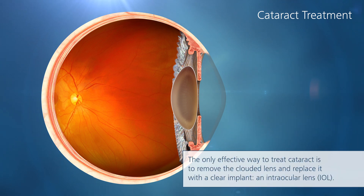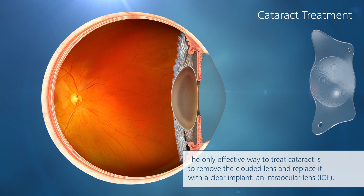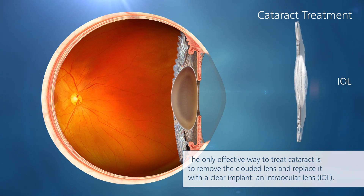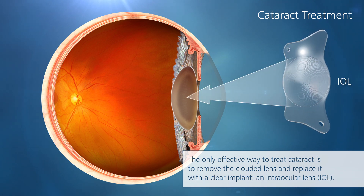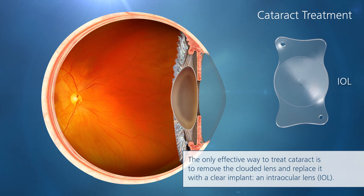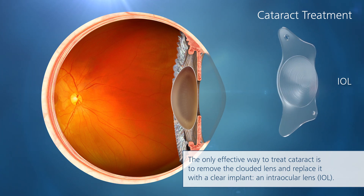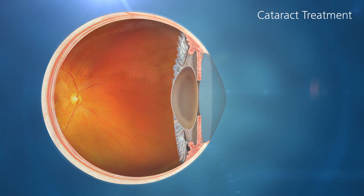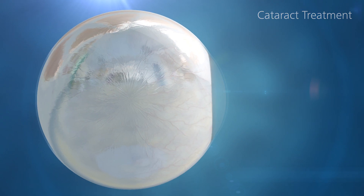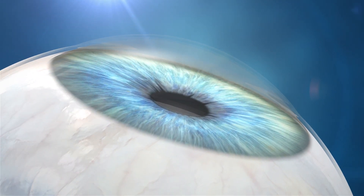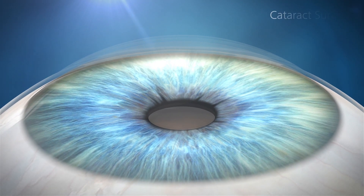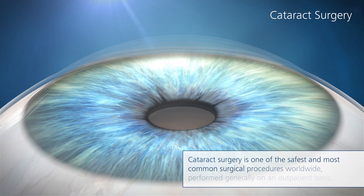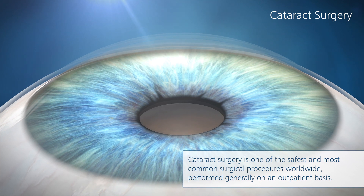The only effective way to treat cataract is to remove the clouded natural lens and replace it with a clear implant, a so-called intraocular lens, IOL. Cataract surgery is one of the safest and most common surgical procedures worldwide, performed generally on an outpatient basis.